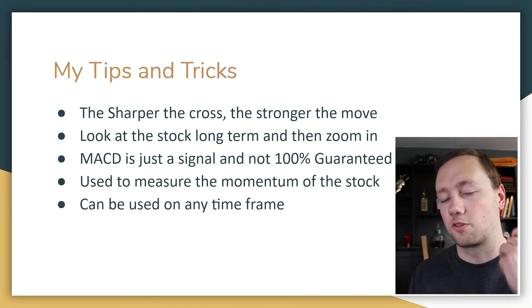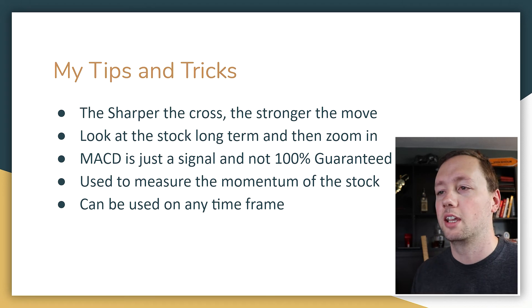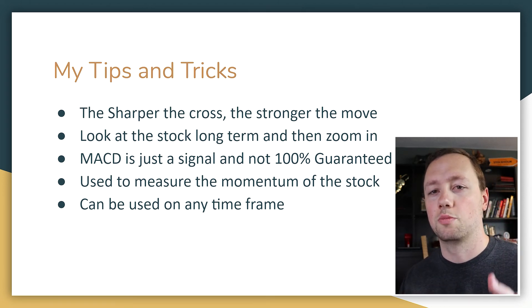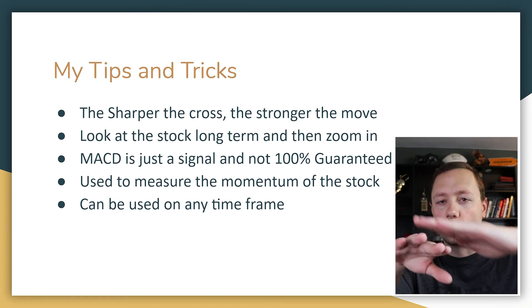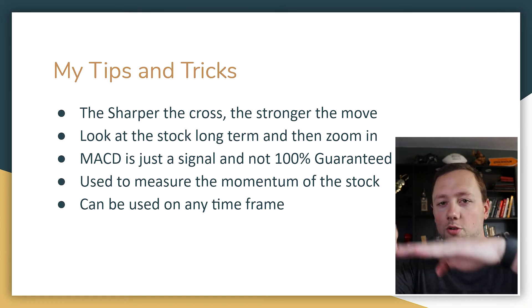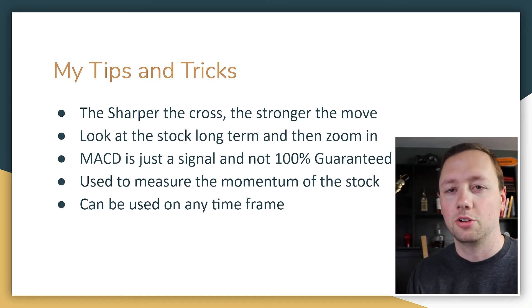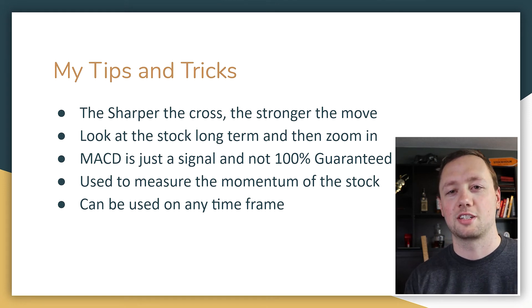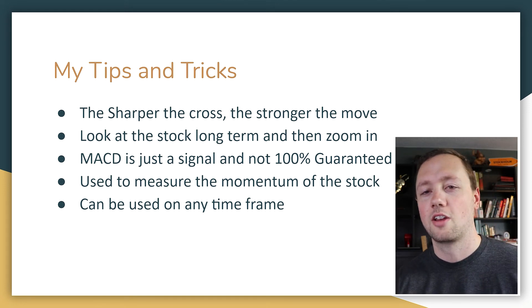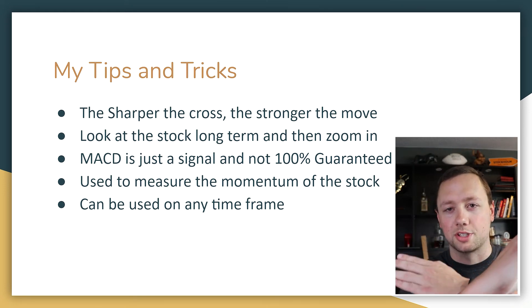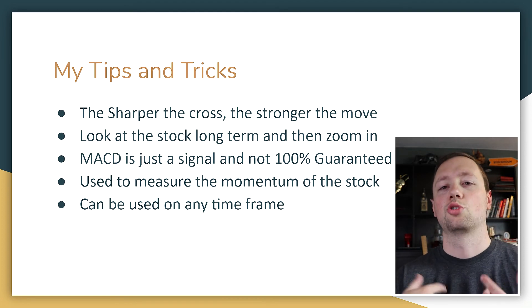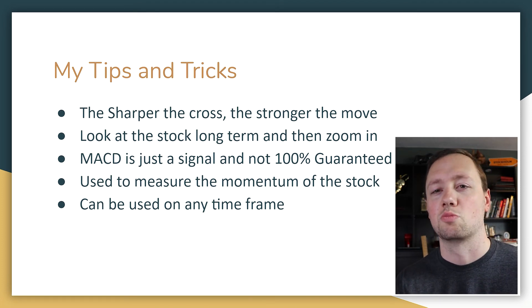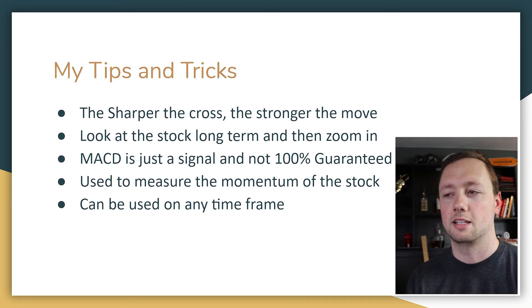My tips and tricks for using the MACD: the big thing is the sharper the cross, the stronger the move. When the two moving averages are kind of intermingled all the way across, that does not show a strong signal. However, when they cross at an almost 90-degree angle, that is a super strong signal with strong momentum, giving us more confidence when using the MACD.